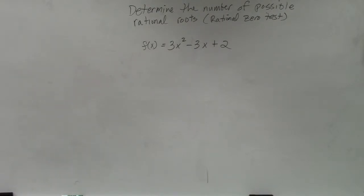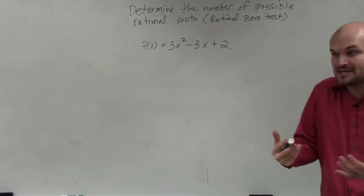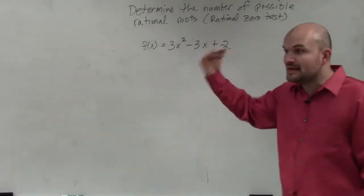The rational zero test. What the difference between the rational zero test and Descartes' rule of signs is the rational zero test is dealing with real numbers. We are assuming that we have real numbers.